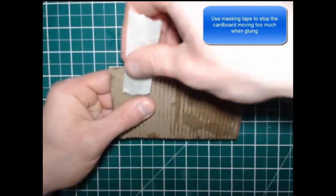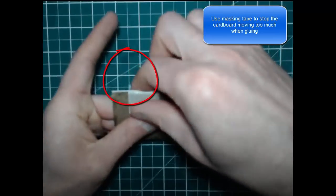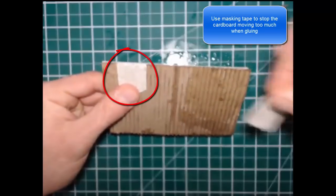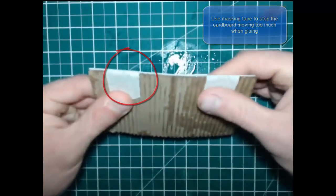Now when you put the glue on it it will be inclined to kind of slide around the place on you so what I do to kind of hold it in position is I get a piece of masking tape and I just wrap it around just to stop it moving while it's gluing.